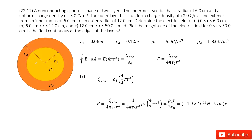So we look at this system. It tells us it's a non-conducting sphere — that's the keyword: non-conducting. What that means is the charge is uniformly distributed inside this object. It is everywhere inside — not just on the surface.